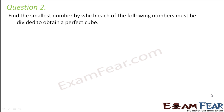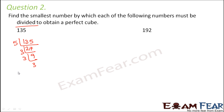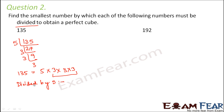Question number 2: Find the smallest number by which each of the following numbers must be divided to obtain a perfect cube. The approach remains the same — just that instead of multiplying, we find what number to divide by. The numbers are 135 and 192. For 135, prime factorization gives 5 into 27, so 135 = 5 × 3 × 3 × 3. Dividing into groups of 3, 3 occurs 3 times but 5 occurs only once. So this number must be divided by 5. The 5s cancel, leaving 3 cubed, which is a perfect cube.